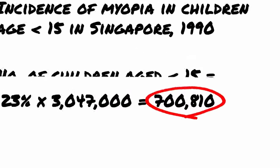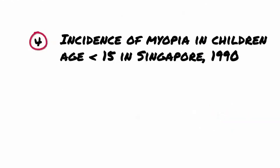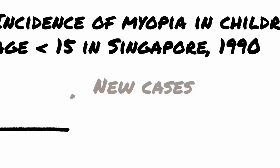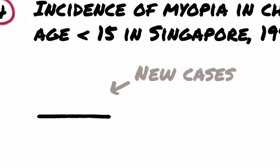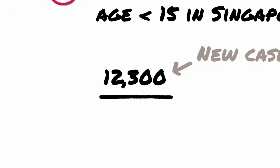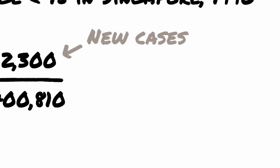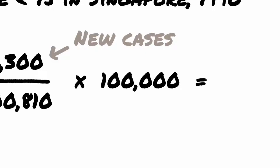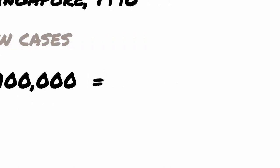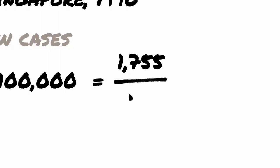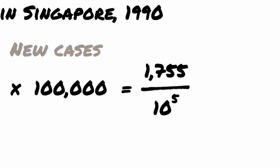To calculate the incidence, we divide the number of new cases, which we know is 12,300, by the population at risk, then multiply by 100,000. This gives 1,755 incident cases of diagnosed myopia per 100,000 children aged under 15 in Singapore in 1990.